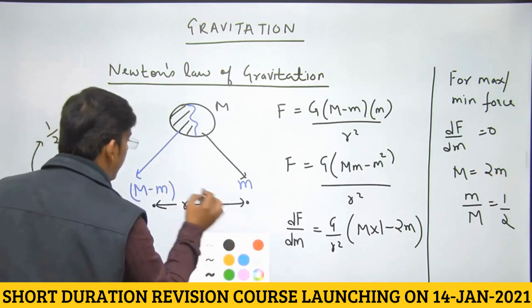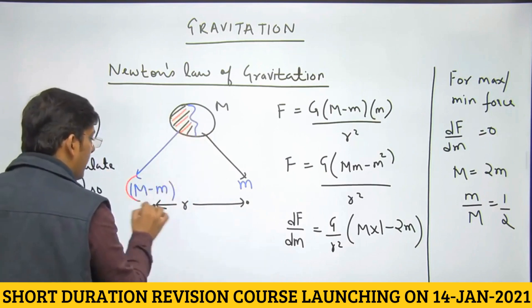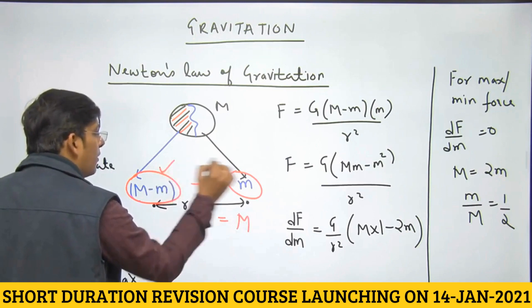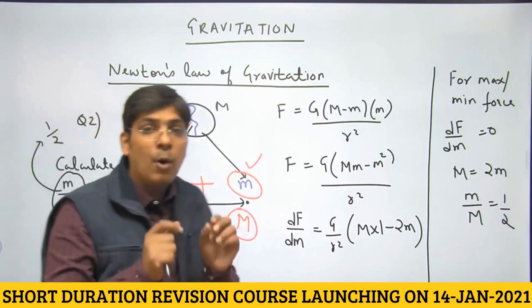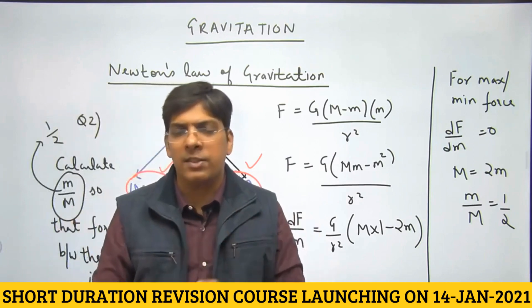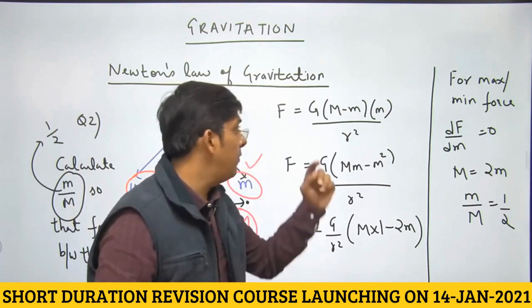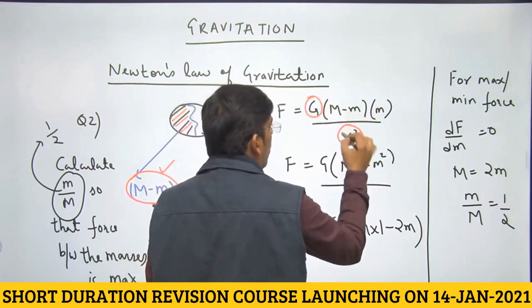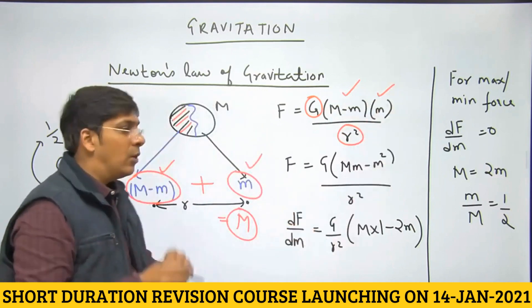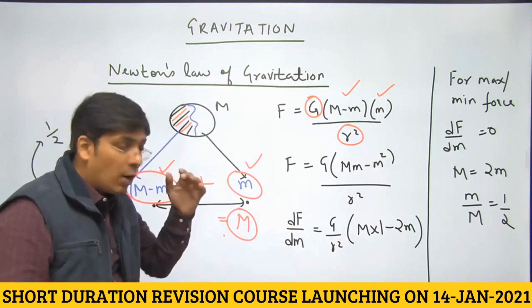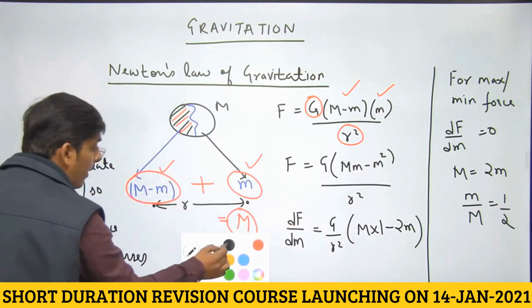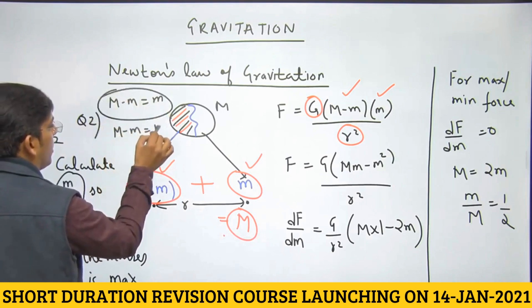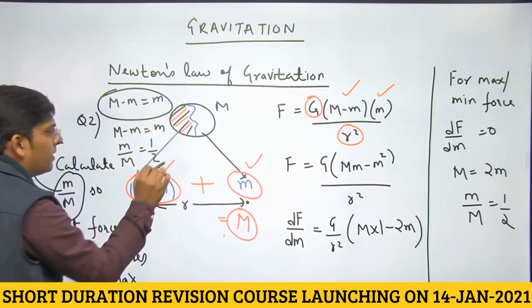There is a super shortcut here too. We divide capital M into two parts: (M − m) and m, whose sum is always the constant M. When the sum of two quantities is constant and we want their product to be maximum, the product is maximum only when the two parts are equal. So both parts equal M/2, confirming m/M = 1/2.